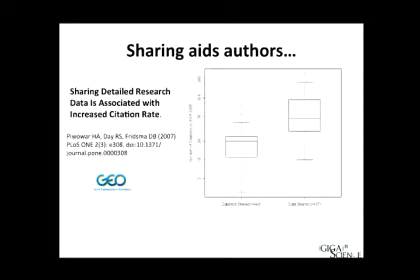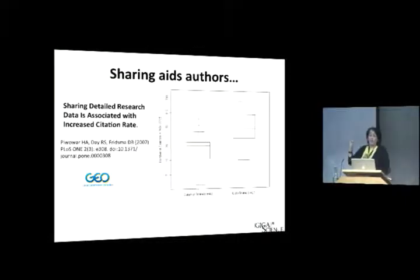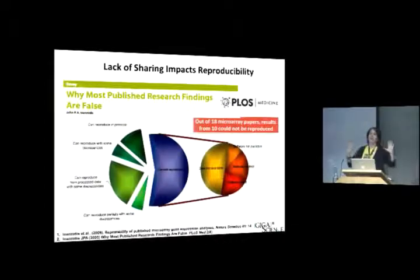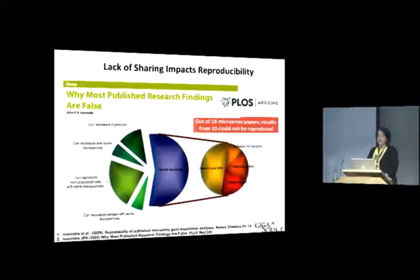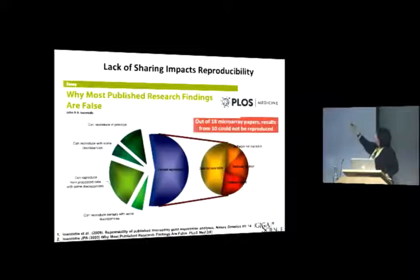Authors are very reticent to share their data. But the facts are that sharing data is associated with an increased citation rate of their papers — if you cite data in your paper, you get higher citations. We've all heard the fact that there are a lot of problems with reproducibility in publications. For a large chunk of microarray papers that could not be reproduced, the major reason was that the data were not available. Other reasons were software not available, methods were unclear, or results were just different.